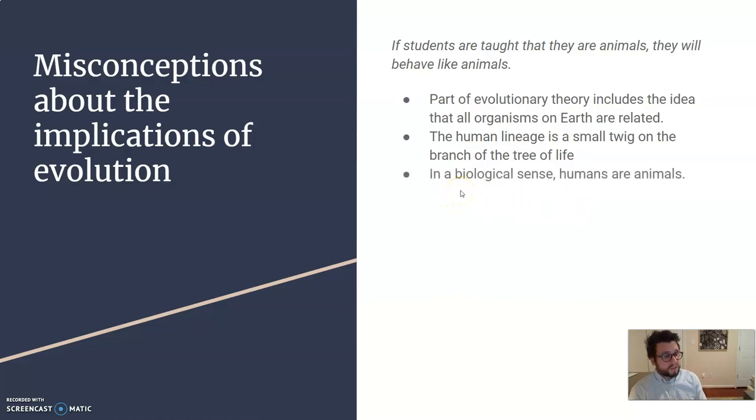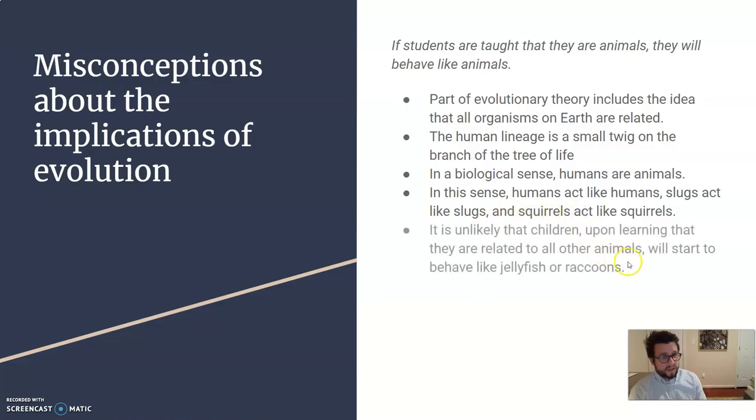In a biological sense, we have animal cells. We are absolutely animals. But humans are going to act like humans. Slugs act like slugs. Squirrels act like squirrels. But just because you learn that you are related to animals in one way or another doesn't mean that you're going to act like a jellyfish or a raccoon or anything else.